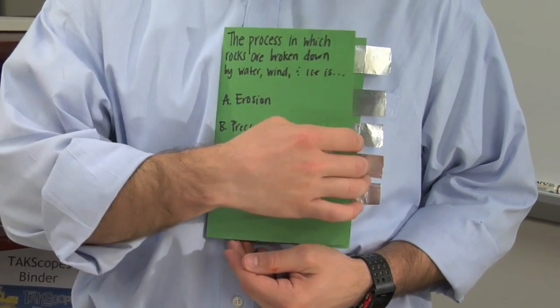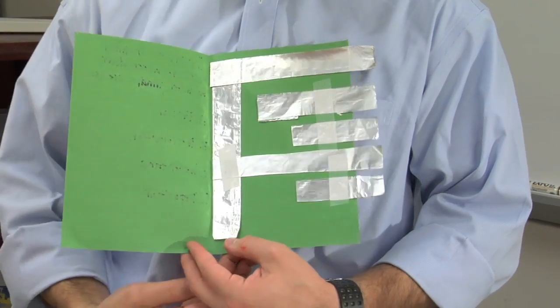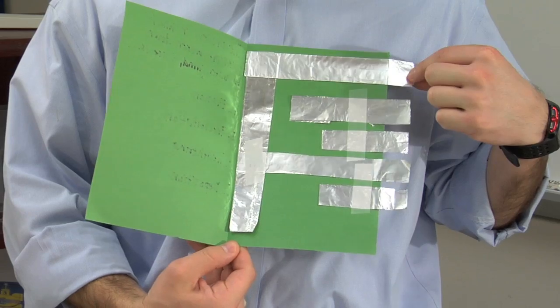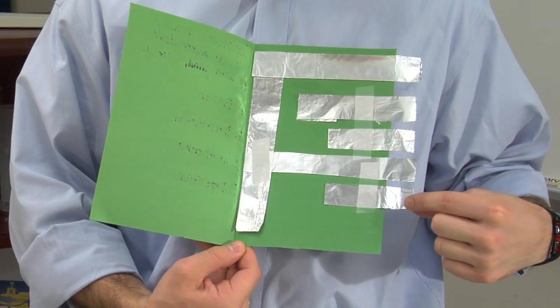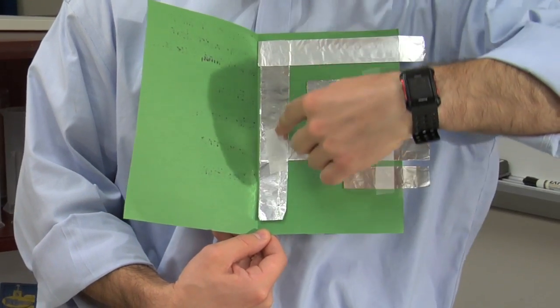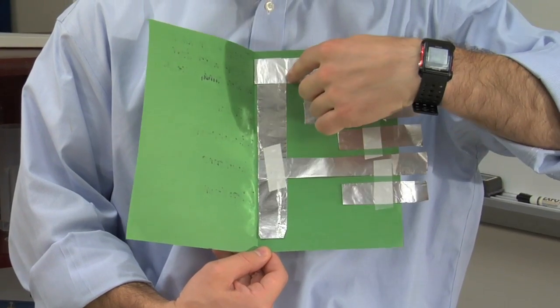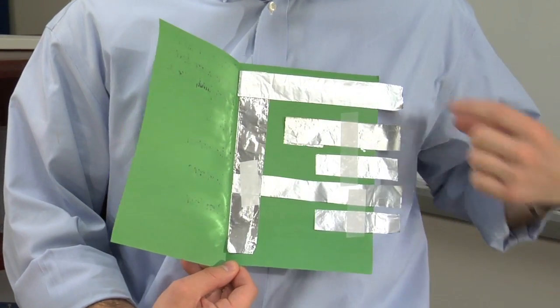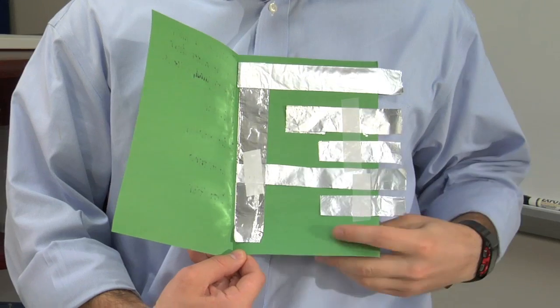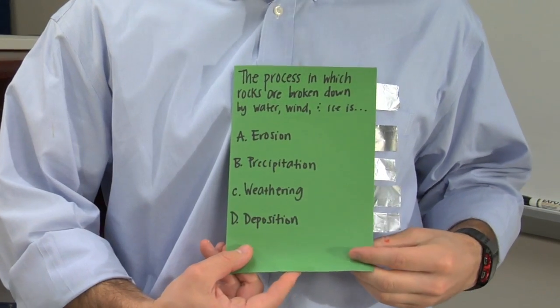On the inside of the card, attach aluminum foil strips to the paper, one for the question and one for each answer choice. There should be an additional vertical strip of foil that runs down the crease of the paper. Only the question strip and the correct answer strip should touch this longer conducting piece.